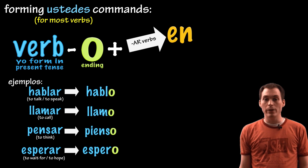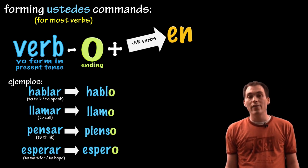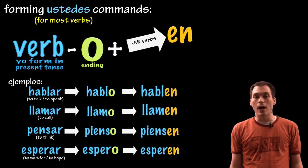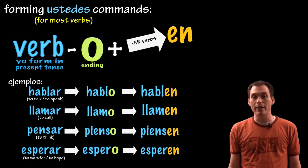In the yo form, so we have hablo, llamo, pienso, and espero. And then take off the O and add EN. Hablen, llamen, piensen, esperen.